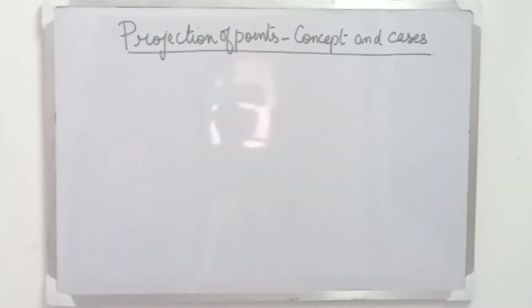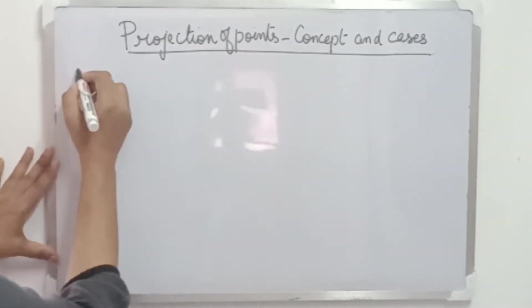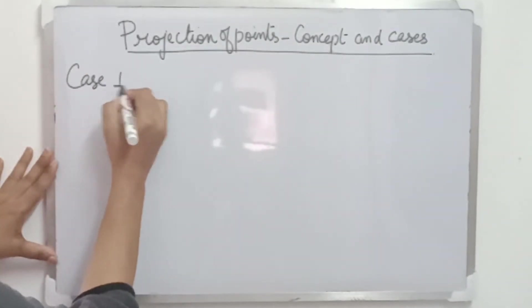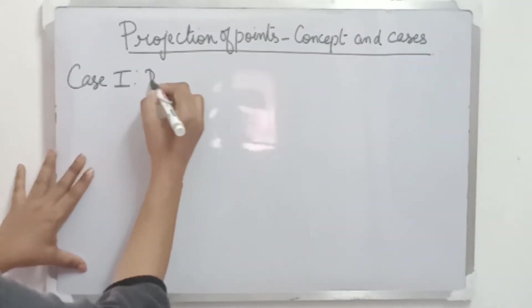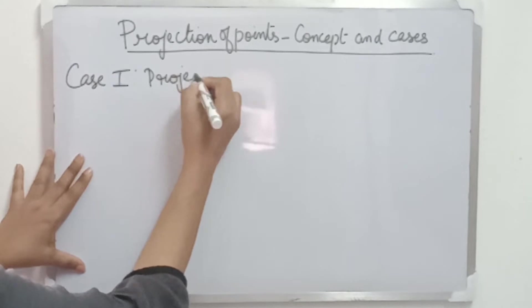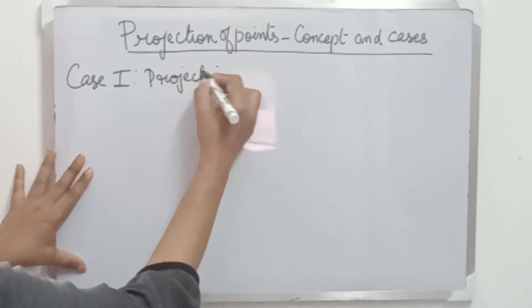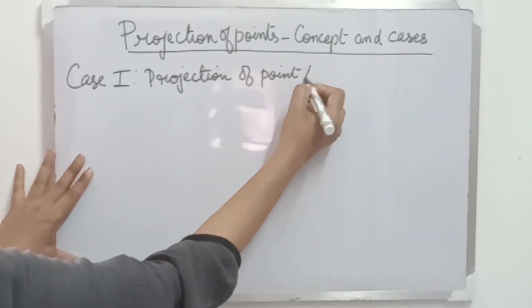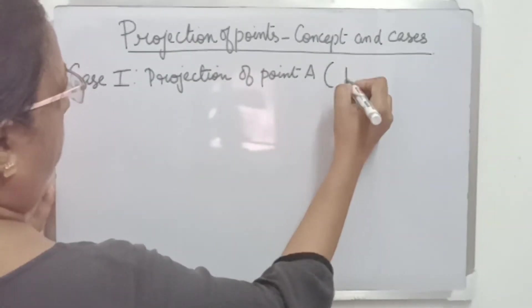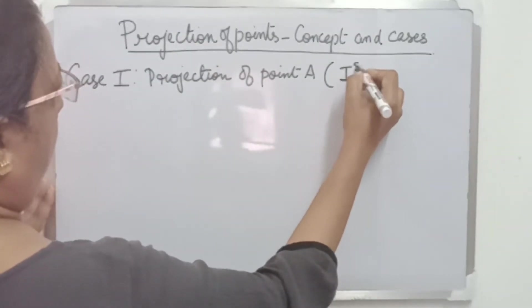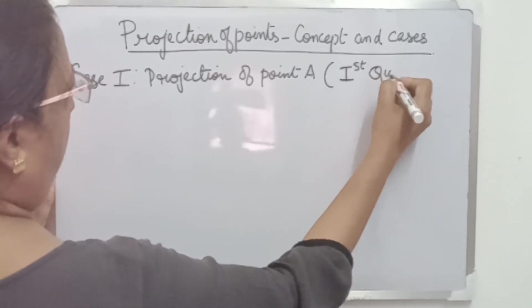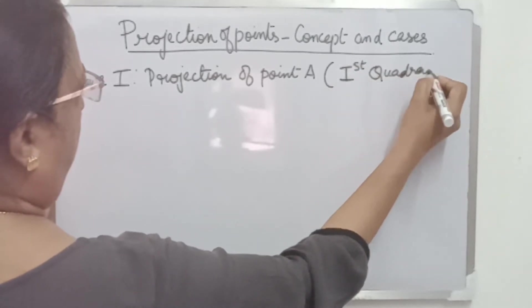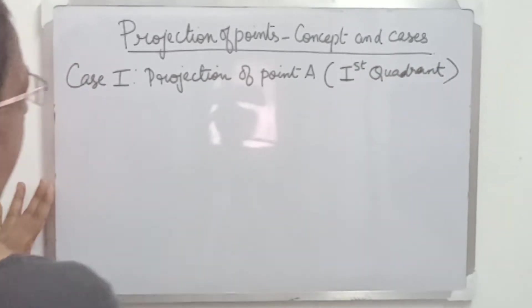I will explain how to draw the projection of points and explain the concepts considering four cases. Case one is the projection of point A, where point A lies in the first quadrant.